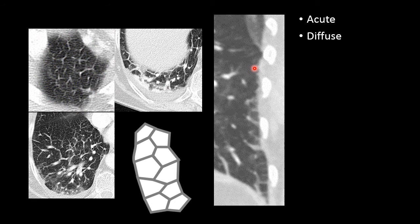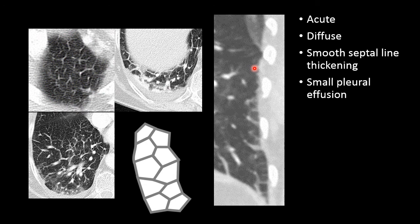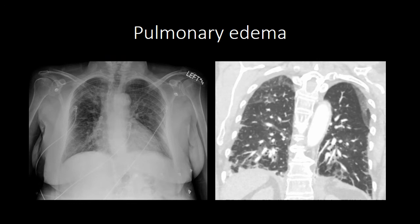This process was acute and diffuse, with smooth septal thickening. There is a small pleural effusion visible on both the x-ray and CT, and a pericardial effusion apparent on CT — this is a case of pulmonary edema. In this case, it's interstitial edema that hasn't progressed to the point where air spaces are beginning to opacify with fluid.